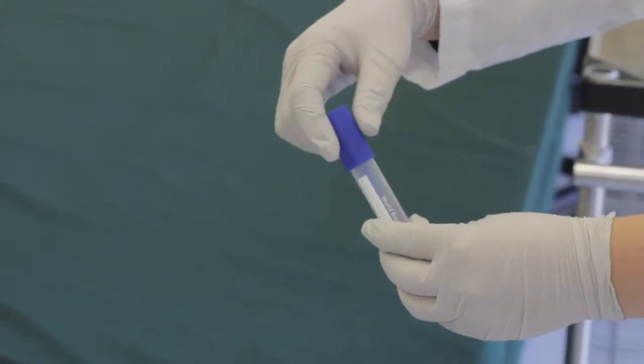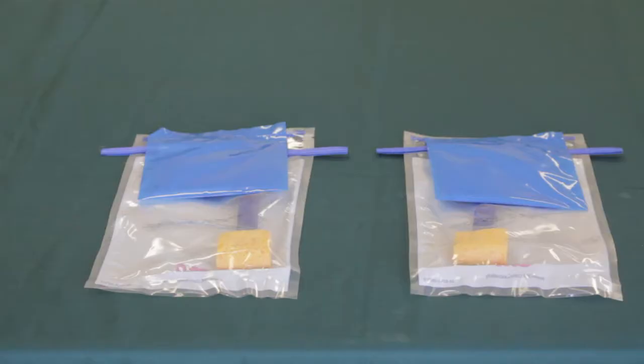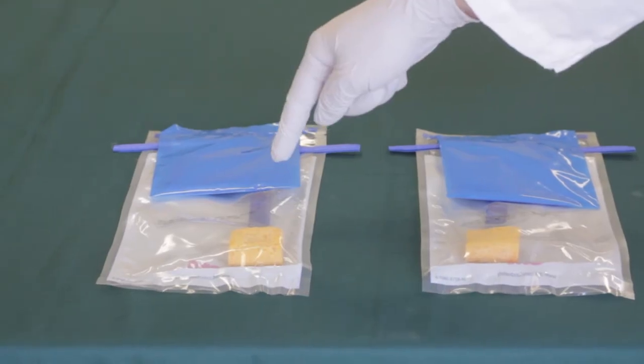If testing for listeria and salmonella from the same area, swab using two separate sponges.